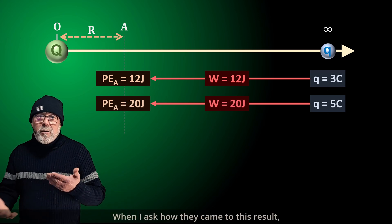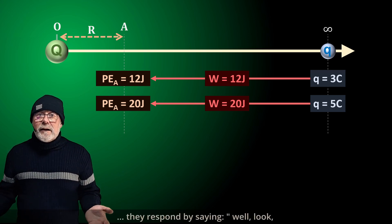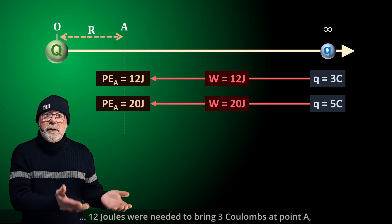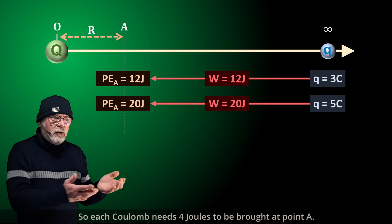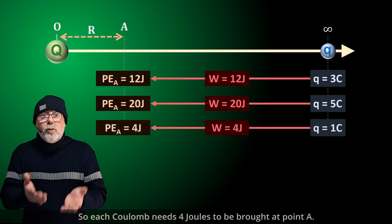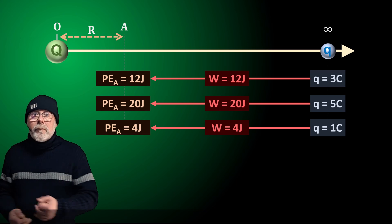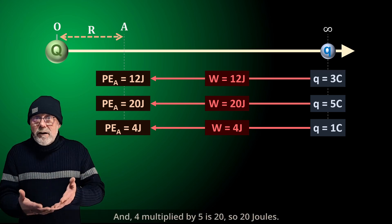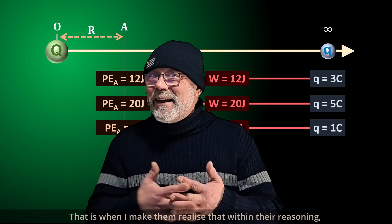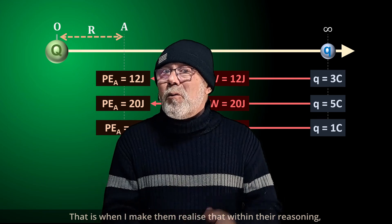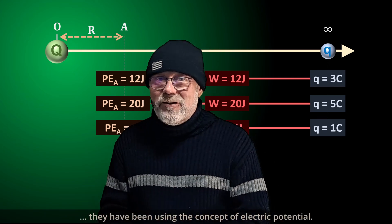When I ask how they came to this result, they respond by saying: 12 joules were needed to bring 3 coulombs to point A, so each coulomb needs 4 joules to be brought to point A, and 4 multiplied by 5 is 20 joules. That is when I make them realize that within their reasoning, they have been using the concept of electric potential.